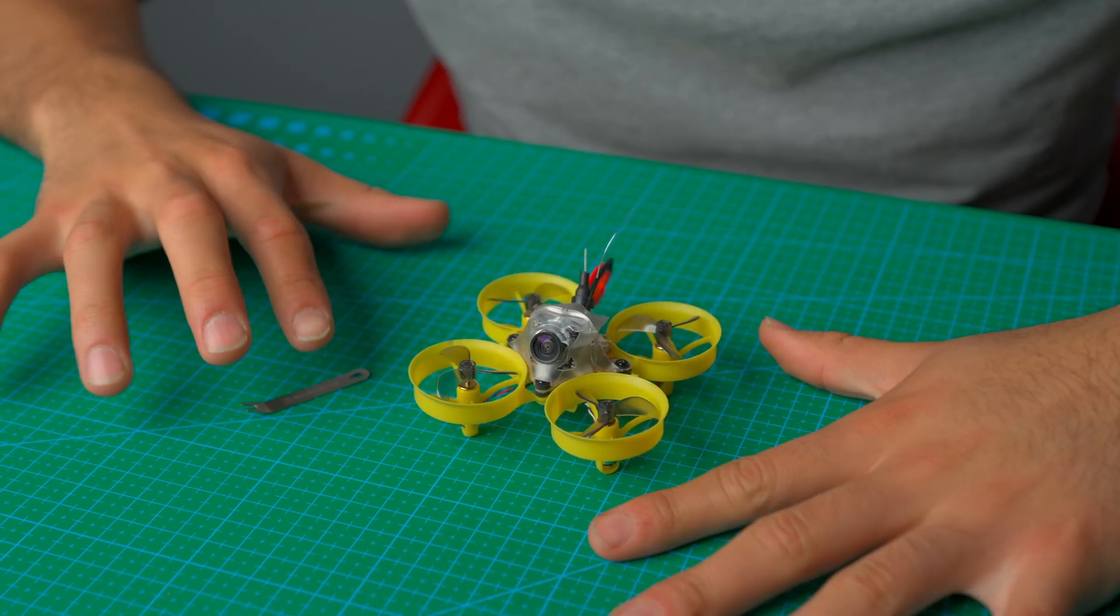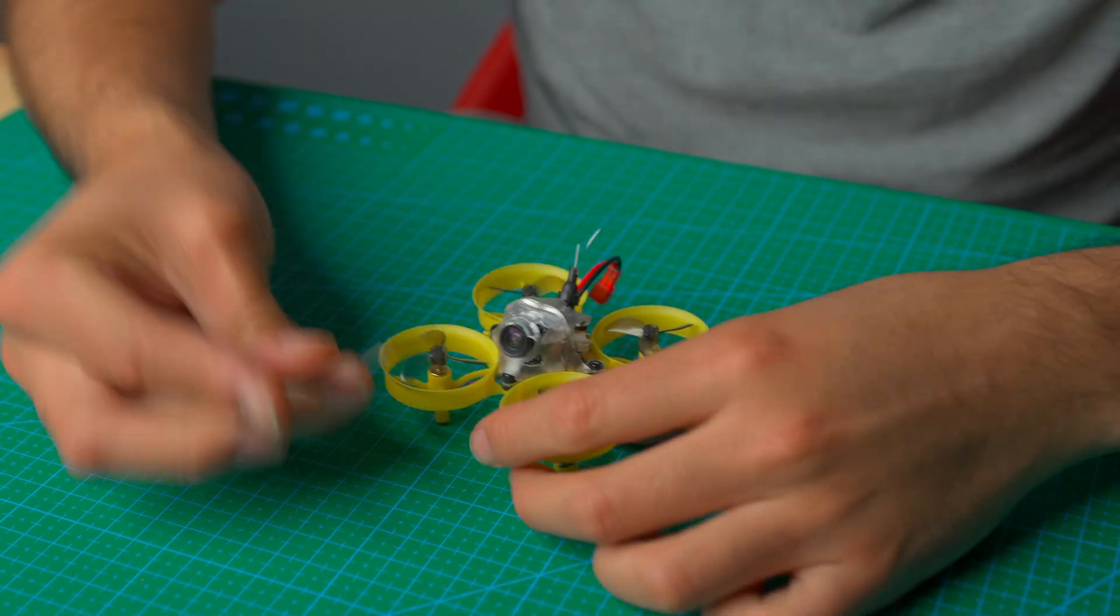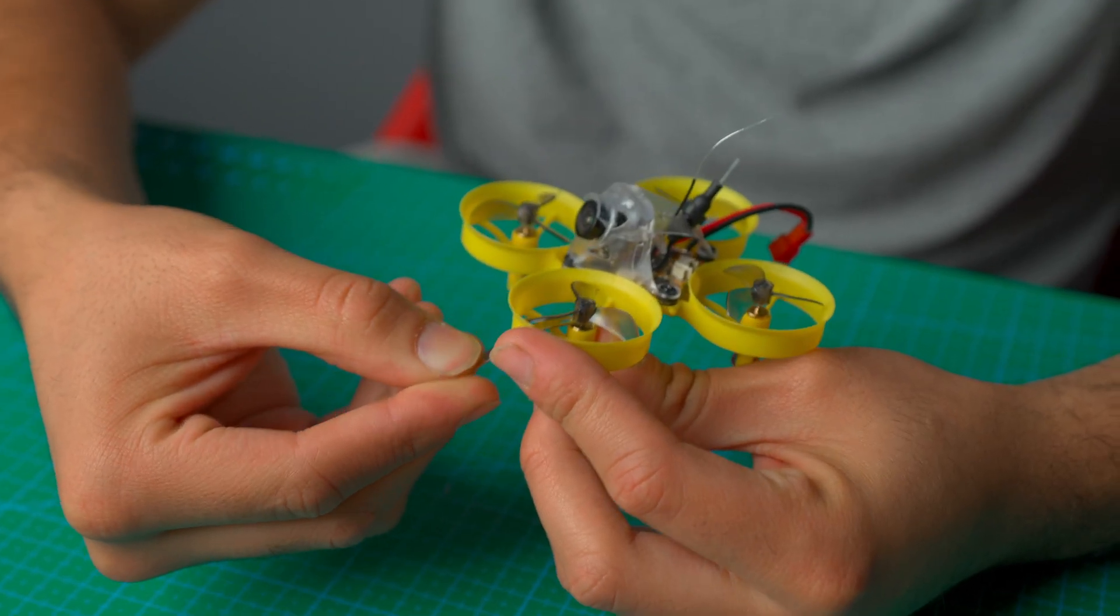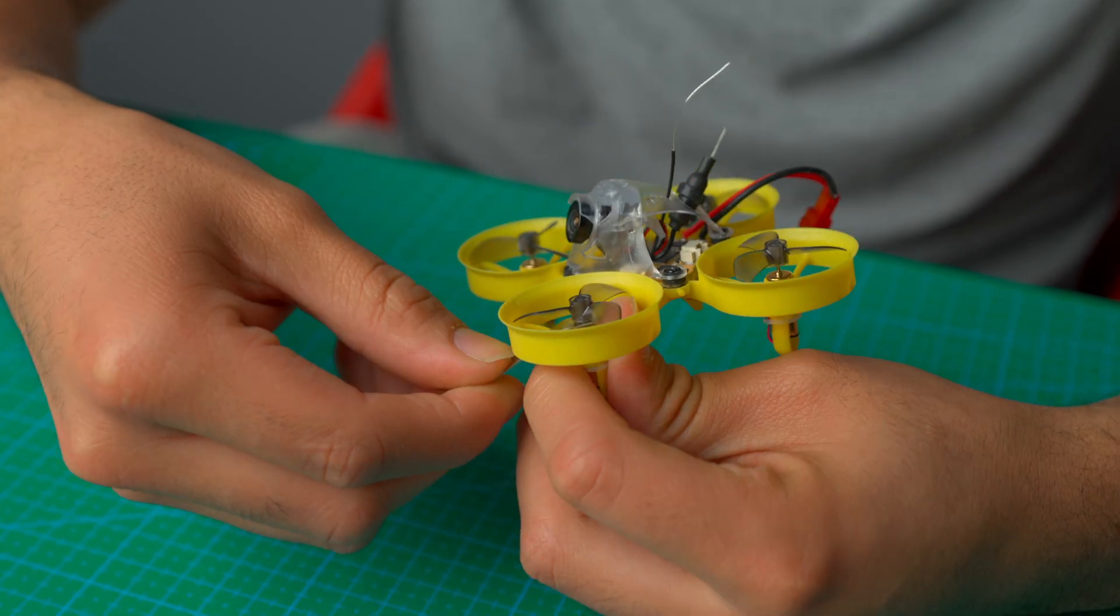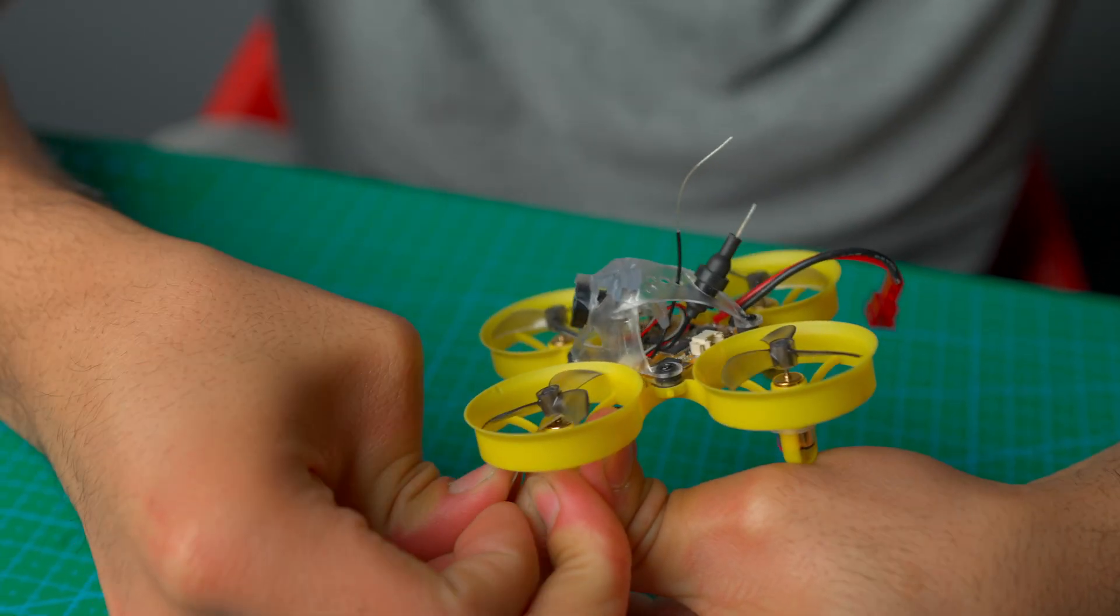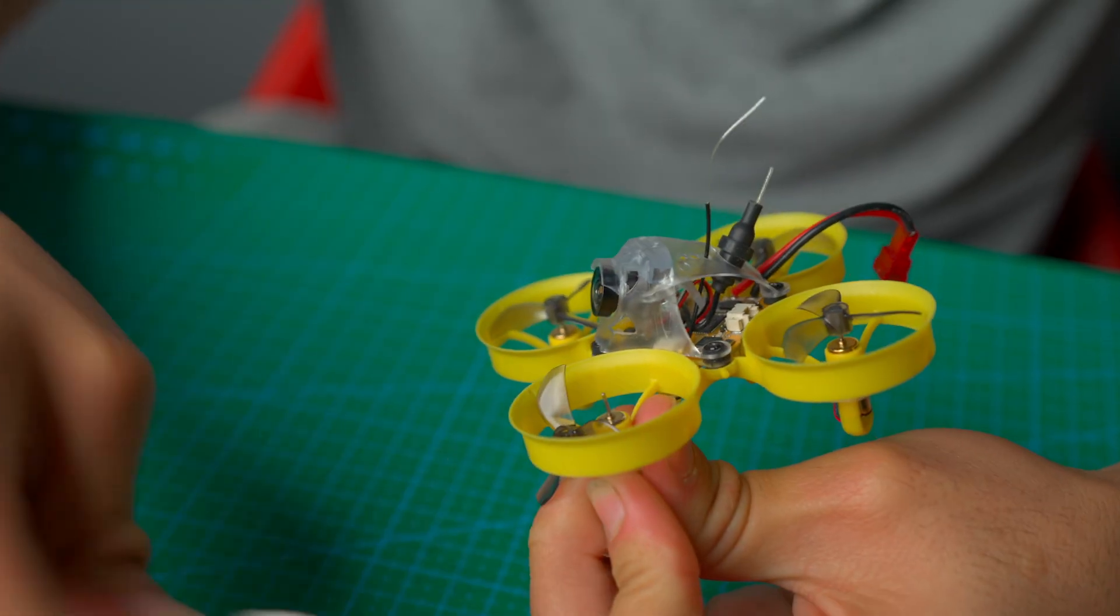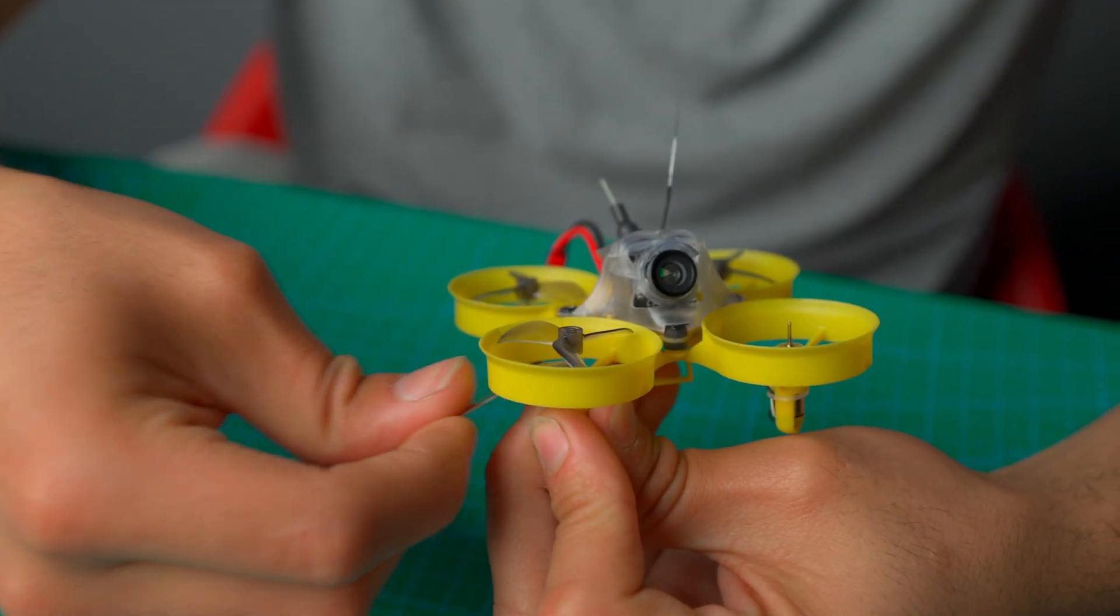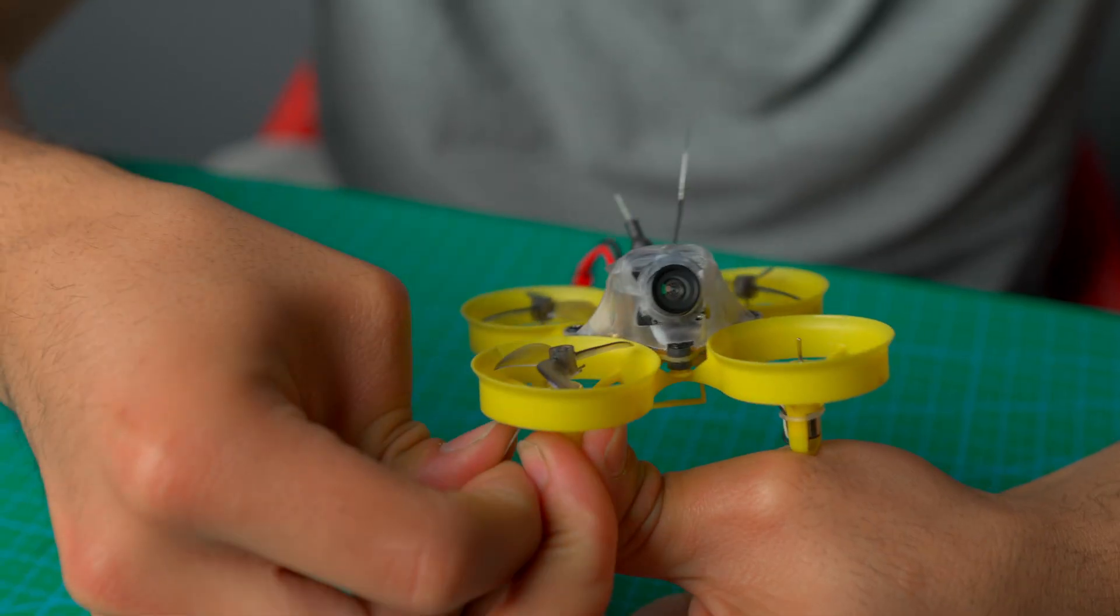So first, we're going to start off by removing our props. So let's go ahead and use our Newbeedrone prop tool. Remember, you want to go from the bottom. So insert it into the bottom of the shaft of the motor and then just push up and the props should come off. Some might be hard. Some might be easy. You guys know how it is. Not everything in life is perfect.